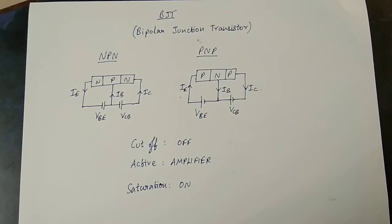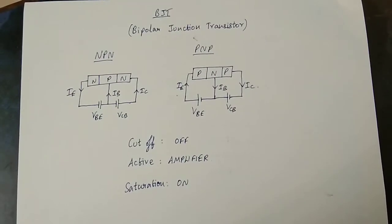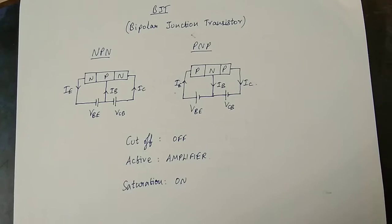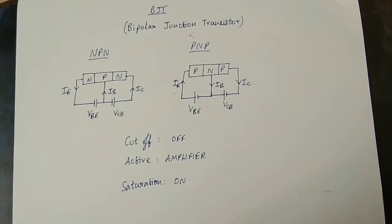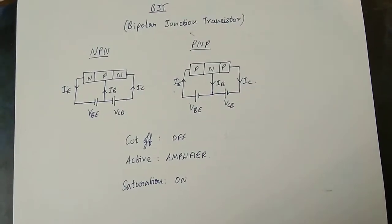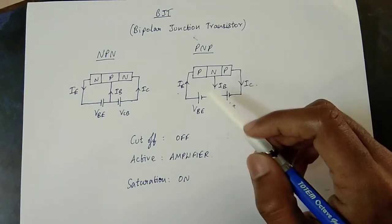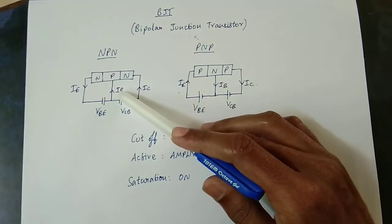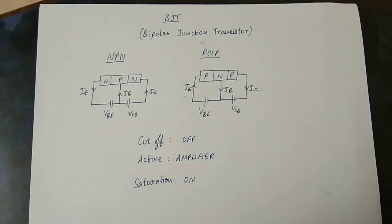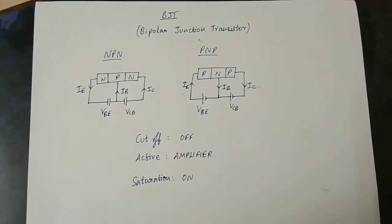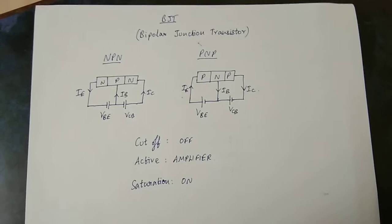There are two types: NPN and PNP. The BJT is a current controlled device — a small current applied at the base controls a larger current flowing from collector to emitter.